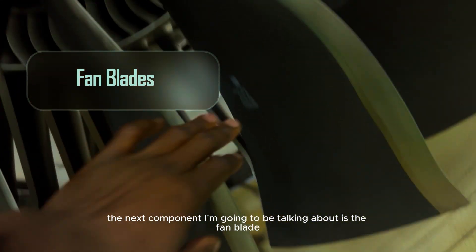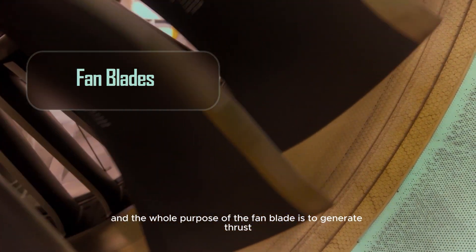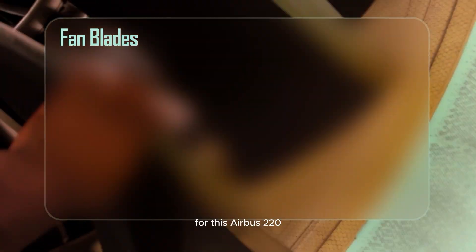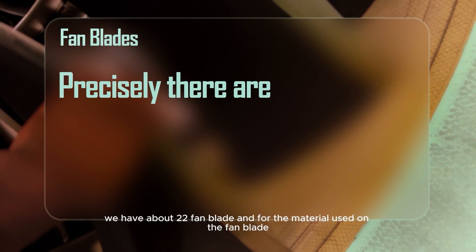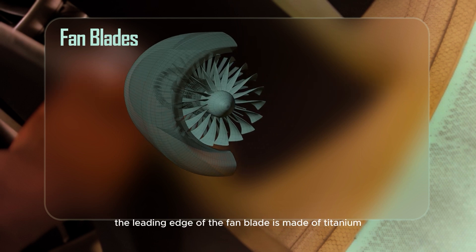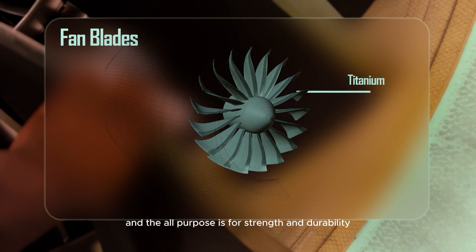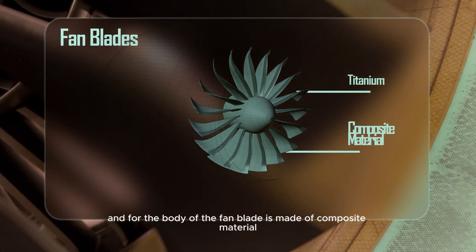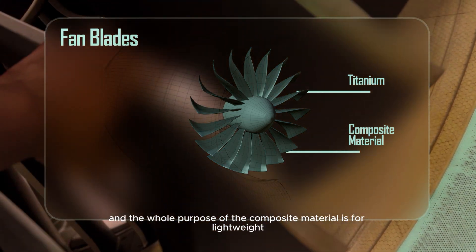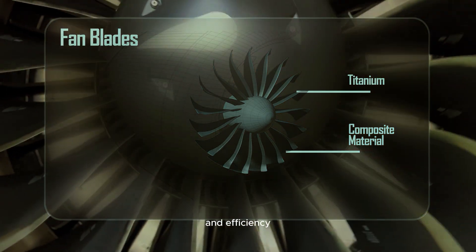The next component is the fan blade, whose whole purpose is to generate thrust. For this Airbus 220 we have about 22 fan blades. The leading edge of the fan blade is made of titanium for strength and durability, while the body of the fan blade is made of composite material for lightweight and efficiency.